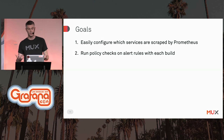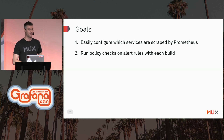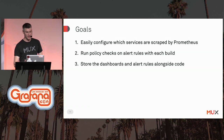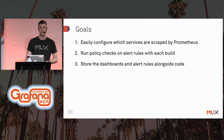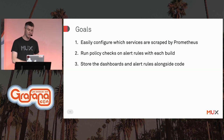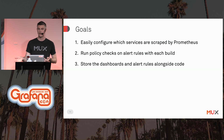Second, we wanted to run policy checks on alerting rules with every build to ensure consistency and make sure everyone's following our internal best practices — so we don't end up with alerting rules in production that are malformed or undesirable. Third, we wanted to store the dashboards and alerting rules right alongside the code they relate to, so there's an obvious place to go when you want to change a dashboard or add an alerting rule. We also wanted dashboards and alerting rules to follow the same pull request review process we have for production code.